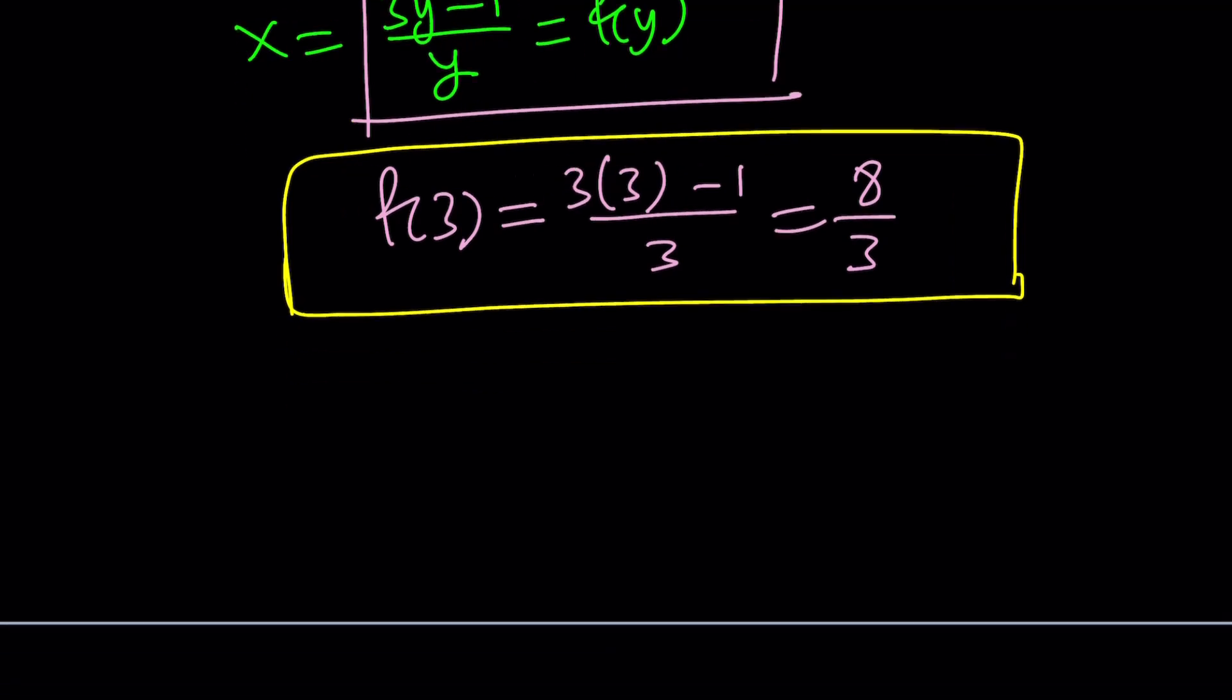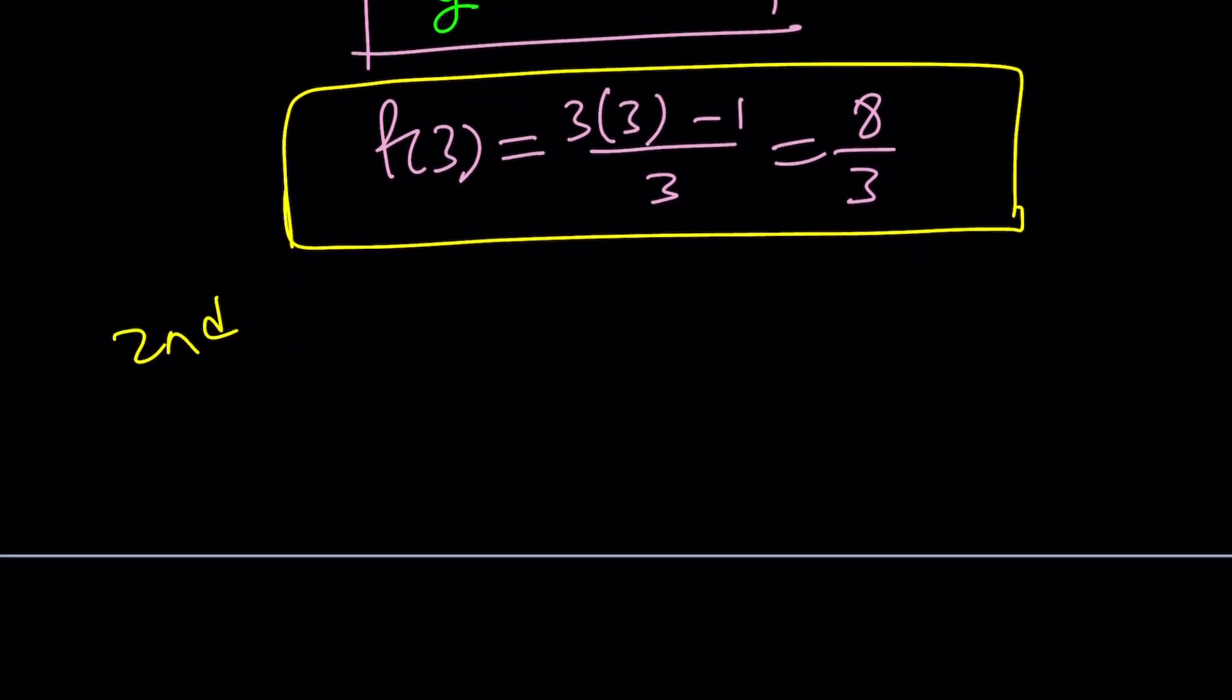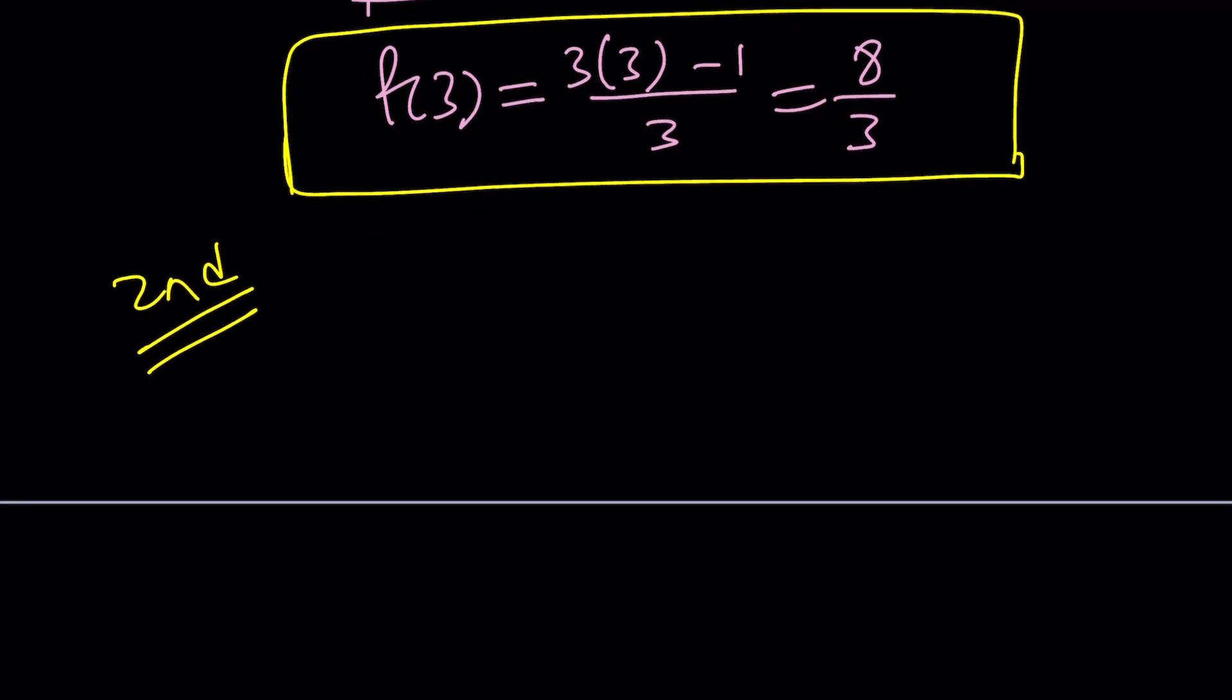Second method. Let's rewrite the problem. We have f inverse of x equals 4 times f inverse of x minus 1 over x plus 1. And our goal is to evaluate f of 3. I mean, if it asks for f of x, obviously we could find it too.